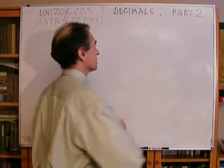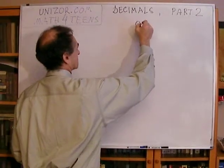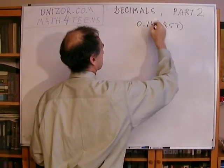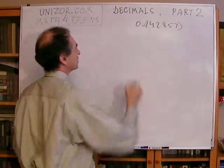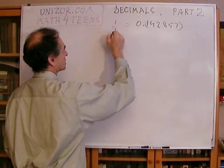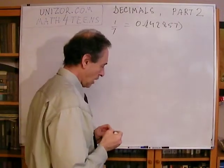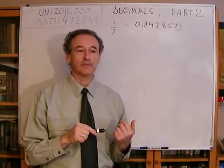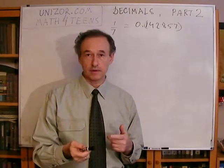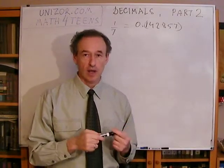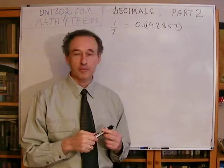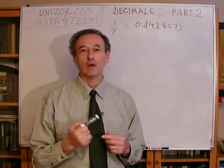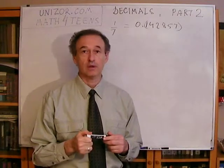For instance, a periodic decimal would be something like 0.142857 with a period, which means an infinite number of times repeated — and this is actually one seventh. Now, in this second part, I will try to prove the converse theorem: that every rational number can be represented as a finite or infinite periodic decimal fraction.